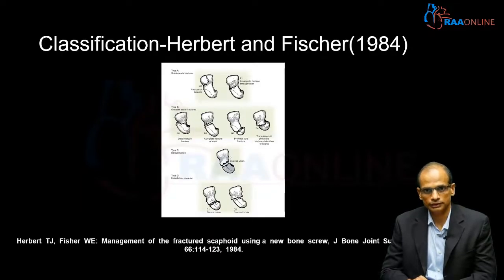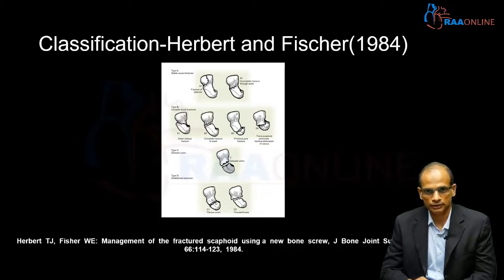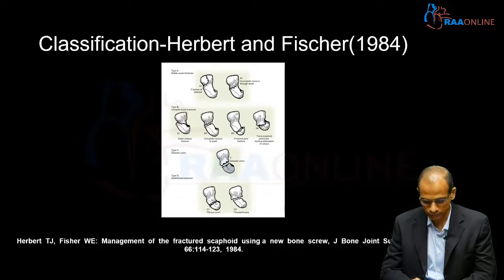The Herbert and Fischer classification is one of the most popular systems for scaphoid fractures. It includes Type A (stable acute fractures), Type B (unstable acute fractures), Type C (delayed union), and Type D (non-unions). While very useful, it has been criticized for combining acute and chronic fractures, as these tend to behave completely differently.